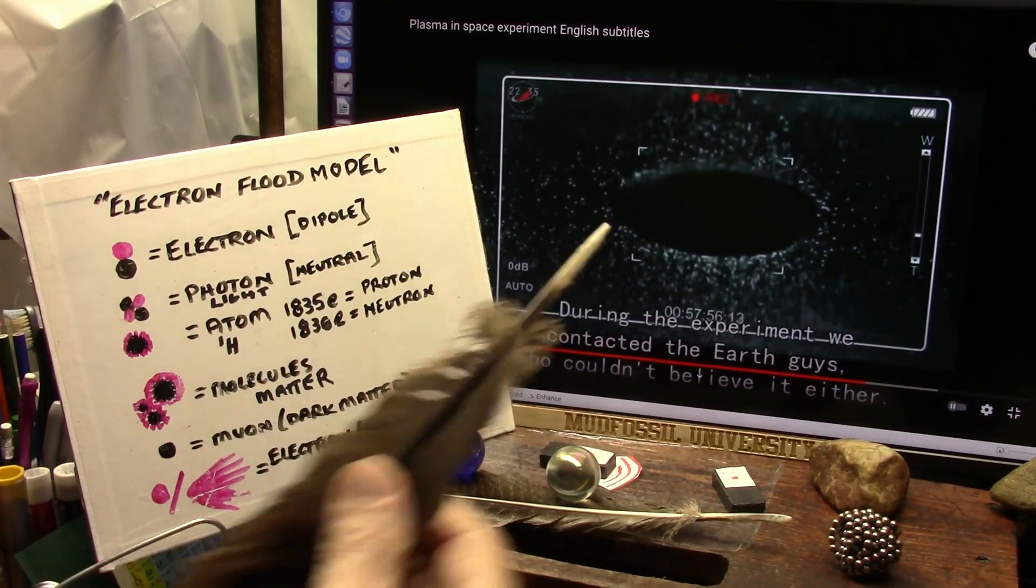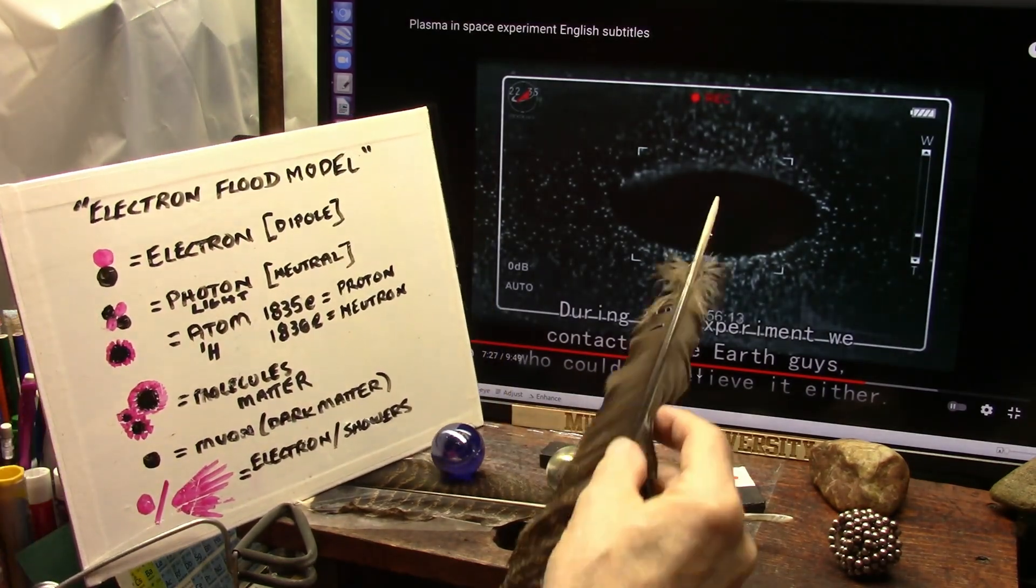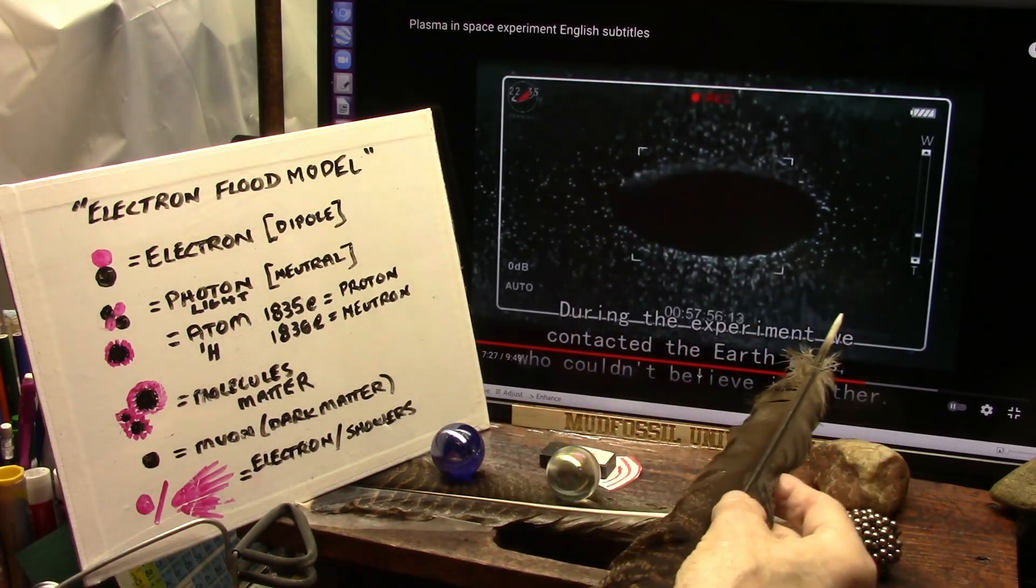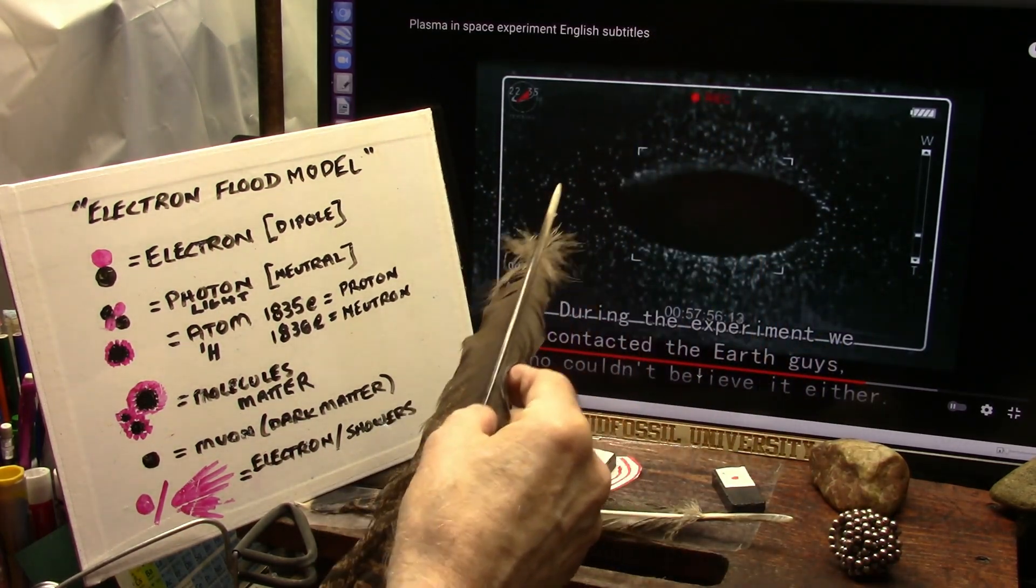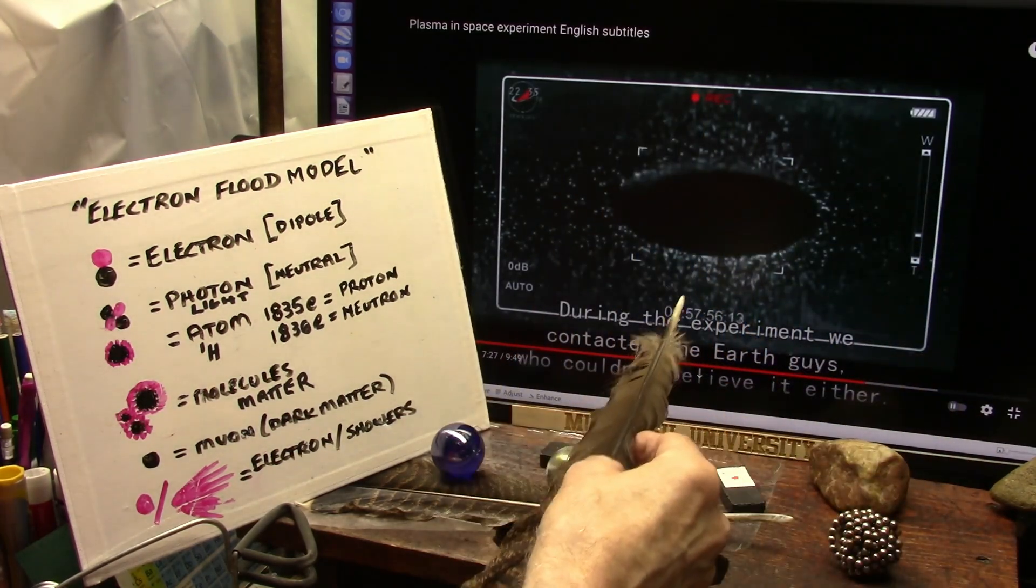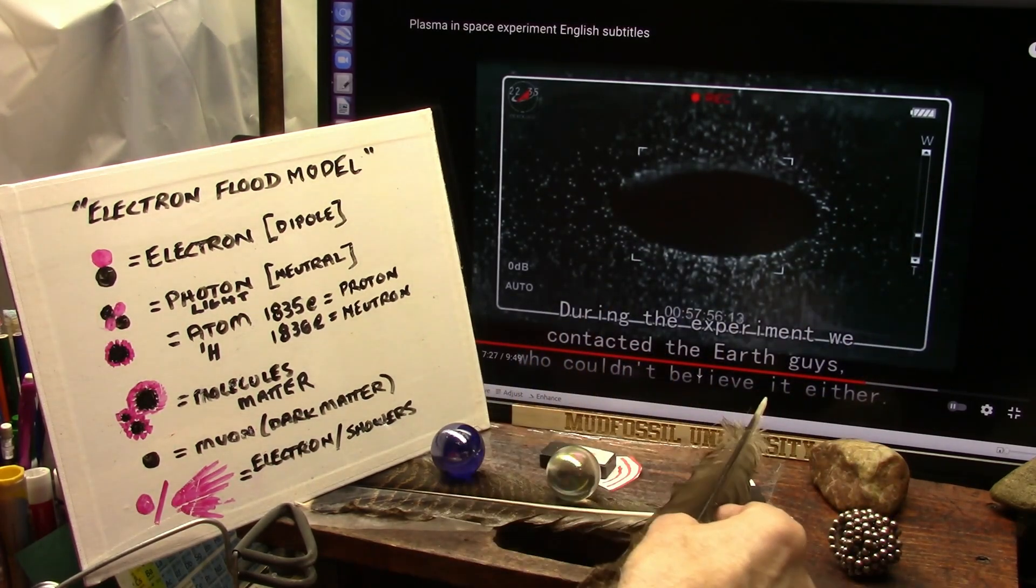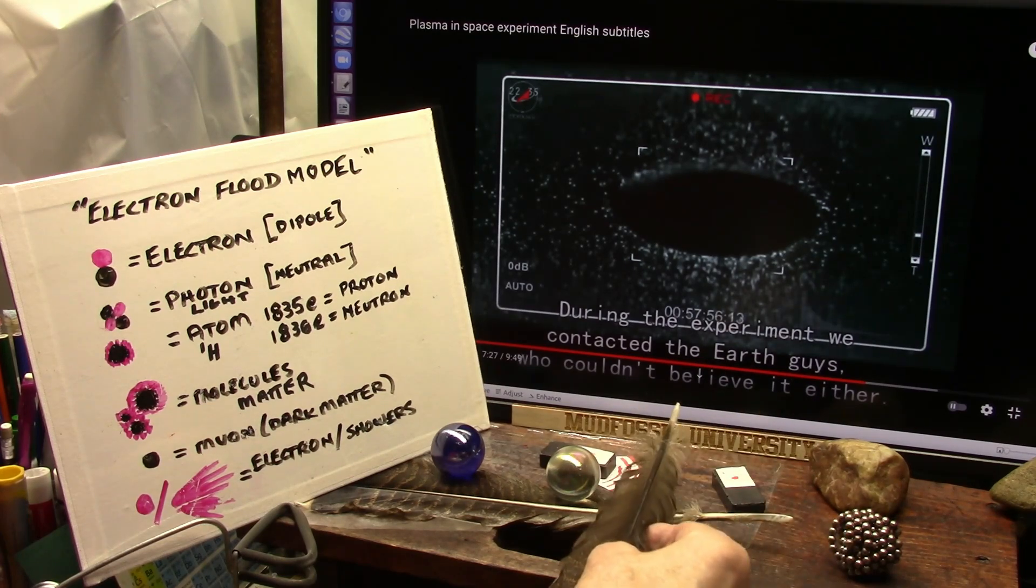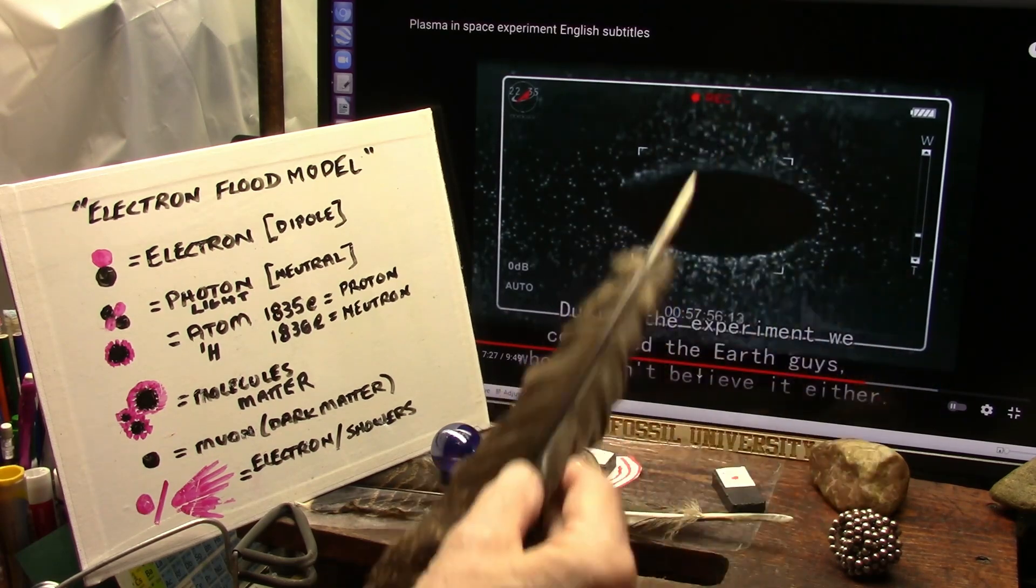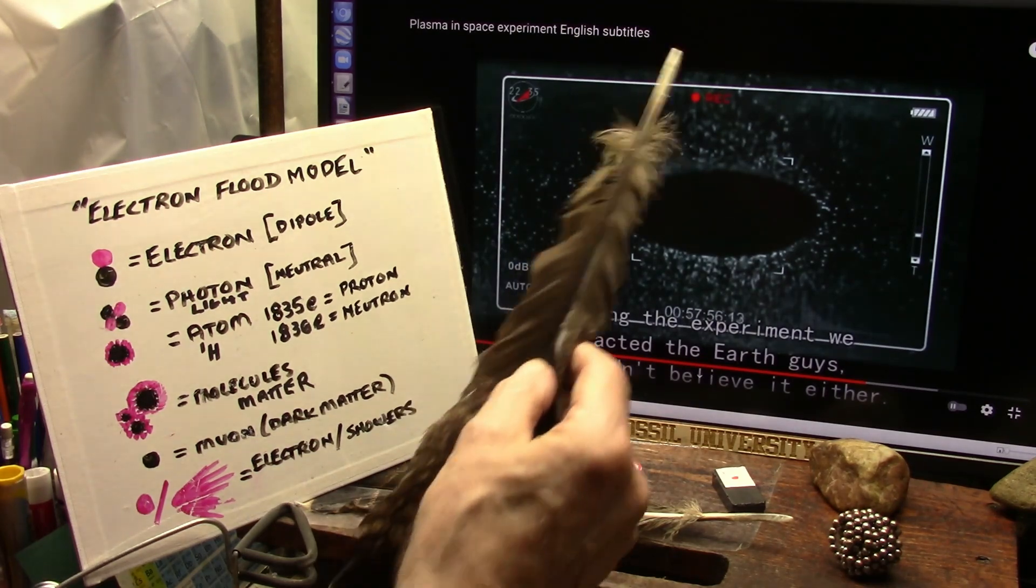All right, here it is right here. This is the Russians in space. They went, they flipped out when they saw this. They had a vacuum chamber in zero gravity. They injected charged particles, which are white. They show up white because they're charged in this environment, and they made a black hole in the center. And they said holy smokes, and nobody could believe it. And even the guys on Earth were watching at the same time, one guy locked himself in his office for three weeks because he freaked out.